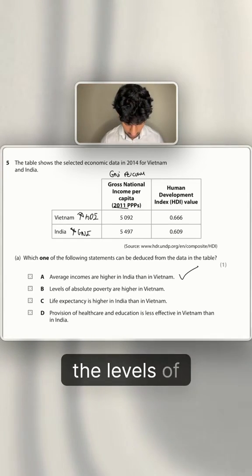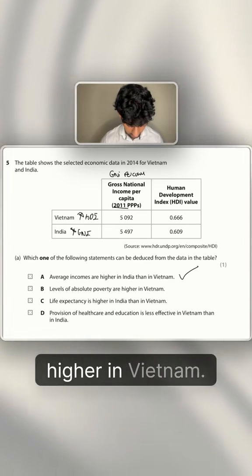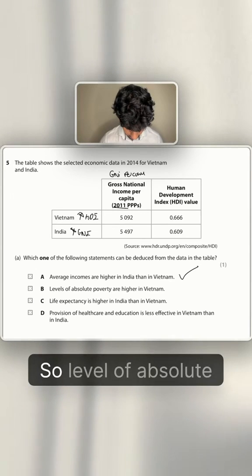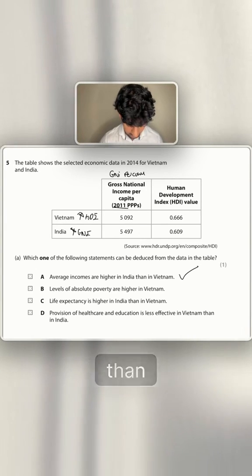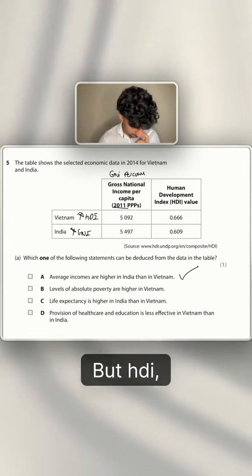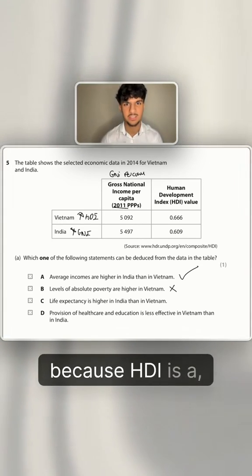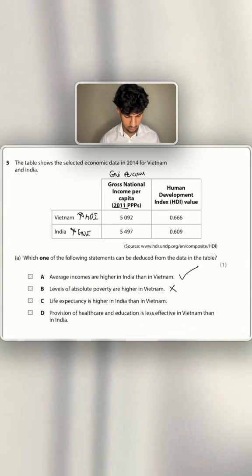The levels of absolute poverty are higher in Vietnam. Vietnam has a higher HDI value, so the levels of absolute poverty are high in Vietnam, but HDI does not tell us actually about poverty itself. I'm going to say that's no, because HDI is a range of indicators, so we can't deduce that from the data we've given.